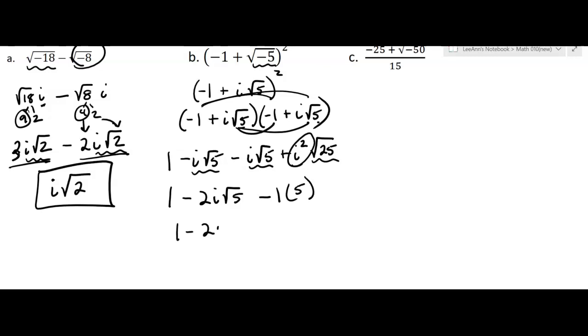So now I've got 1 minus 2i square root 5 minus 5. But, and sometimes people forget this part, the 1 and the minus 5 can be combined. So I'm going to say negative 4 minus 2, oops, minus 2. I was having a moment. My computer was having a moment. All right, and we're going to write the answer like this. And it's in a plus bi form. Okay.